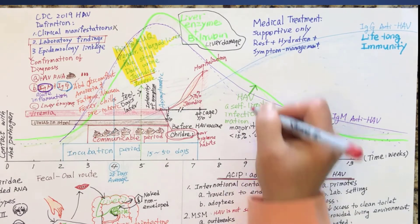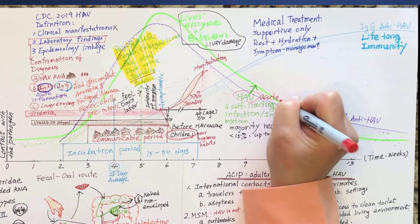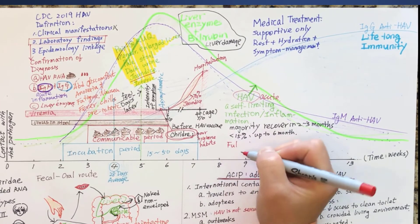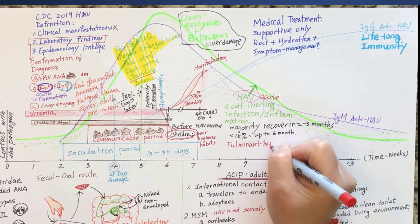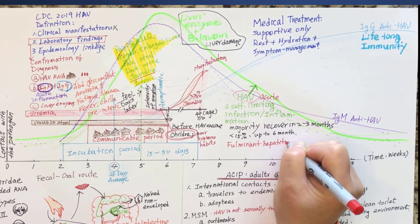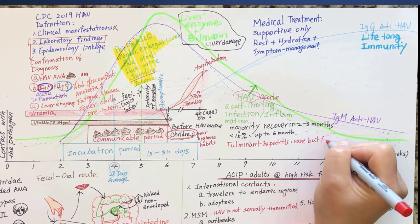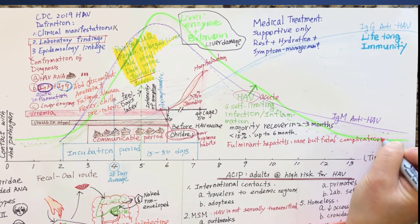Complications are rarely reported. Atypical complications may include immunologic, neurologic, hematologic, pancreatic, and renal extrahepatic symptoms. Fulminant hepatitis is the most serious complication and can be fatal. Luckily, this complication rarely occurs.